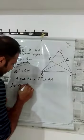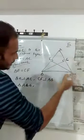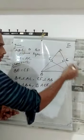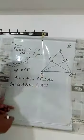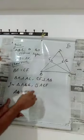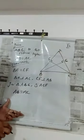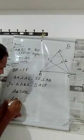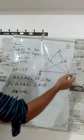In triangle ABE and triangle ACF: AB equal to AC — that is given. AB and AC are equal. And another given is angle A — angle A in both triangles is common.